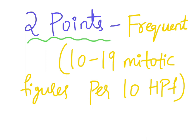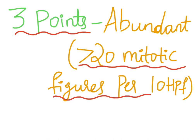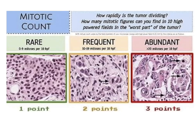Two points are given when there are frequent mitotic figures, that is 10 to 19 mitotic figures per 10 high power field. Three points are given when there are abundant mitotic figures, that is more than 20 mitotic figures per 10 high power field.